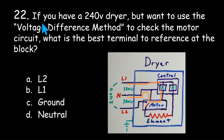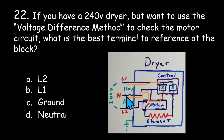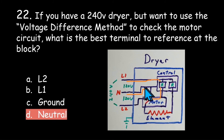Number 22: if you have a 240 volt dryer but want to use a voltage difference method to check the motor circuit, what is the best terminal to reference at the block? L2, L1, ground, or neutral? The motor circuit runs from neutral to L1 — that's a 120 volt circuit. So this is a trick question: the answer is neutral. Since it's a 120 volt circuit, it is not part of the 240 volt circuit that involves L2, so you would use neutral to troubleshoot the motor circuit.